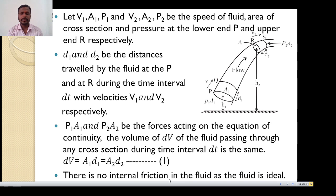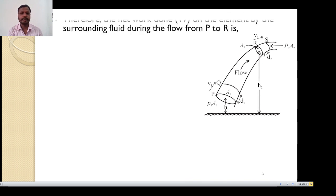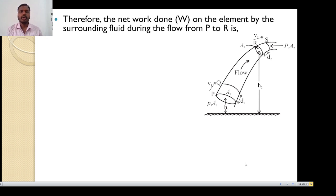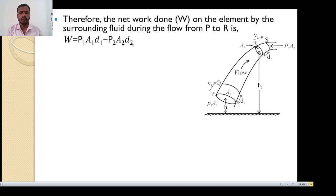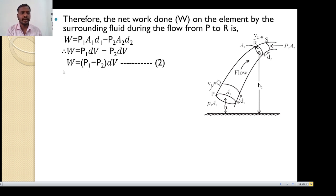There is no internal friction in the fluid as it is ideal. Therefore, the net work done on the element by the surrounding fluid during the flow from P to R is: W equals P1 A1 D1 minus P2 A2 D2. As we know that work done equals pressure into volume, and A1 D1 equals dV and A2 D2 equals dV. Taking dV as common, we can write W equals (P1 minus P2) into dV.